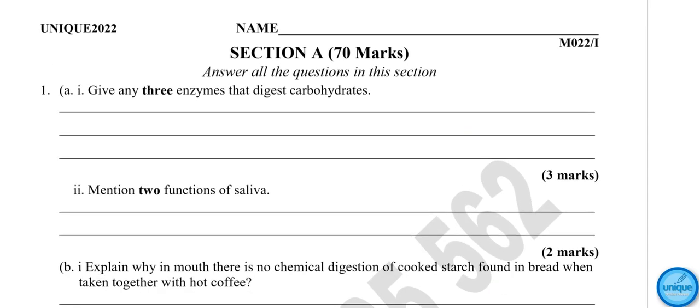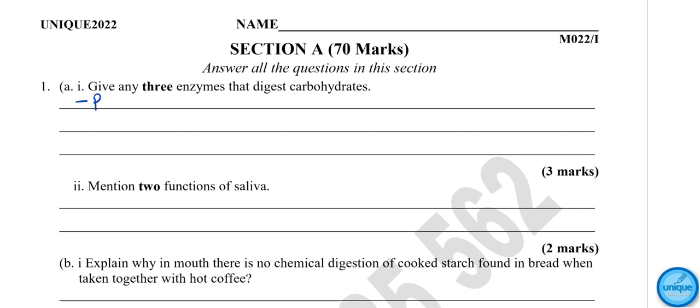The first question was, give anything that digests carbohydrates. We have ptyalin, the other name of ptyalin is salivary amylase. It is found in the saliva and digests cooked starch into maltose. And we have pancreatic amylase.